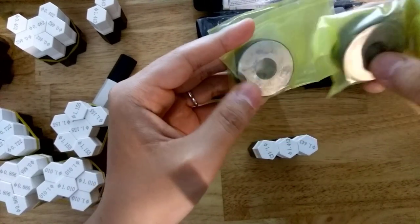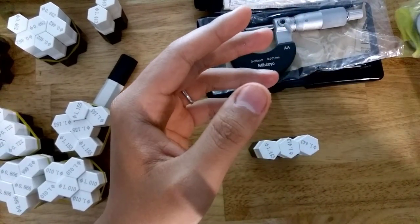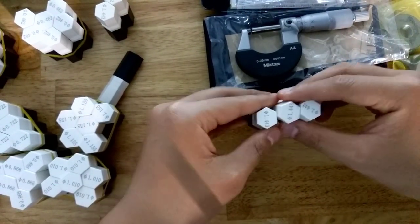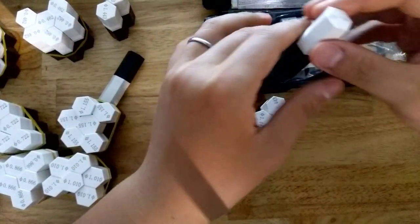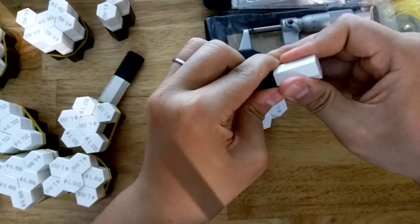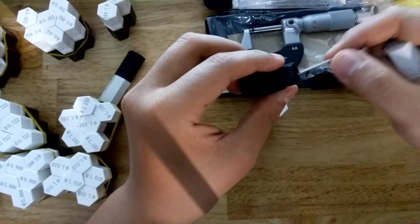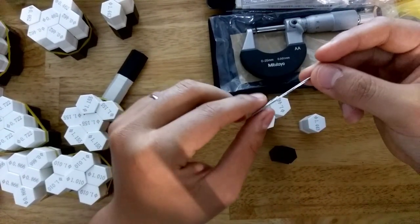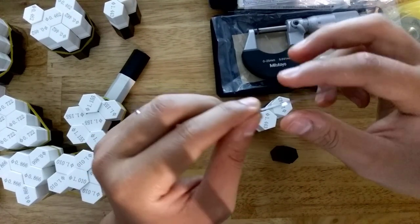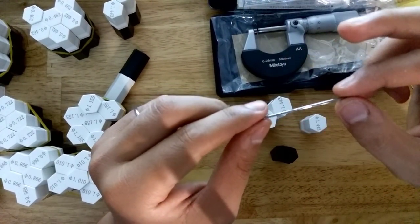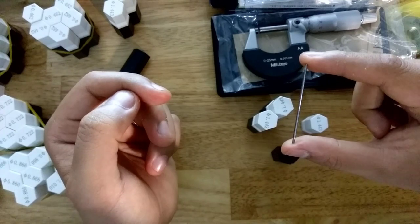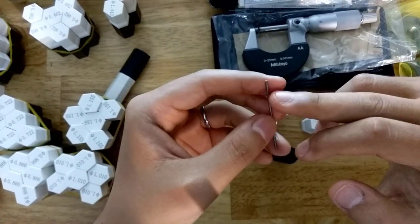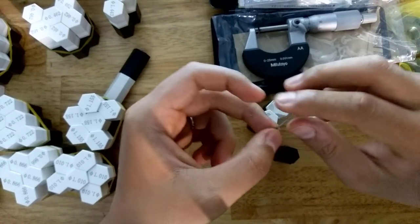So we have another way, and this way is very popular for checking the pitch diameter of the thread. That is using the three-wire method. In this method we use three wires with an external micrometer to check the pitch diameter of the thread. So we can skip the gauge, but with this method we can only check the pitch diameter, we cannot check the angle of the thread.